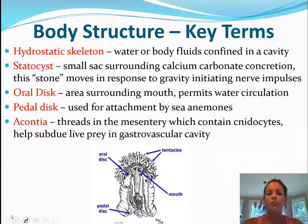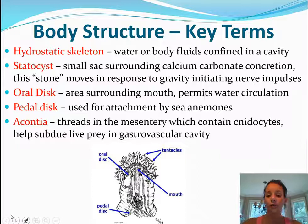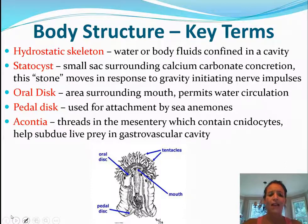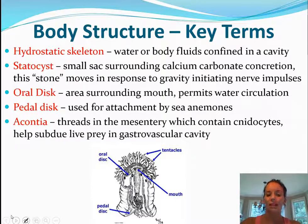They also have two types of discs: an oral disc and a pedal disc. The oral disc surrounds the mouth and allows water circulation, while the pedal disc is used for attachment — this is primarily seen in sea anemones. They also have something called the acontia, which is in the mesentery and contains nematocytes — those are what sting their prey when they try to catch them.